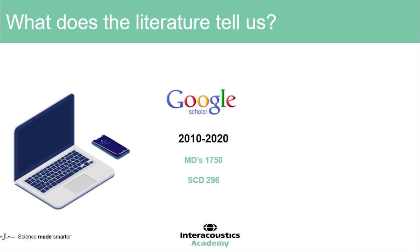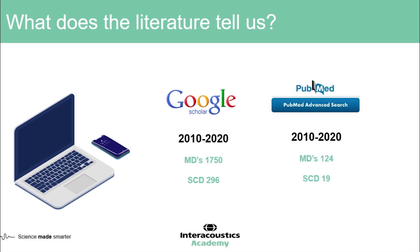So what's the literature telling us? If you do a Google Scholar search for the last 10 years on articles relating to Meniere's disease or endolymphatic hydrops and VEMP measurement, there are about 1,750 articles. Superior canal dehiscence is a relatively rare and newer condition, with about 296 articles on Google Scholar. On PubMed, with peer-reviewed articles only, Meniere's disease has 124 articles in the last 10 years and superior canal dehiscence about 19 — roughly the same ratios, reflecting the frequency we might see these conditions in clinic.